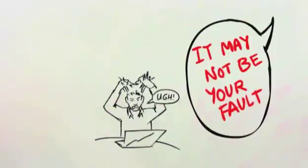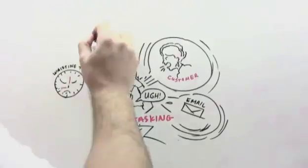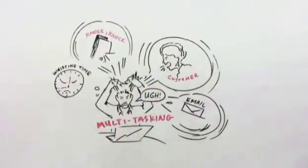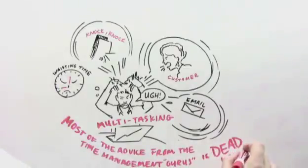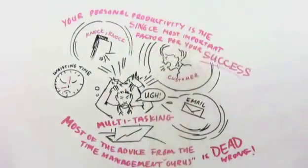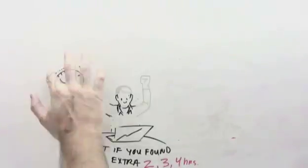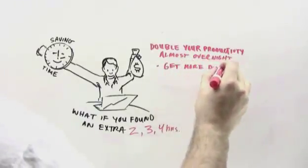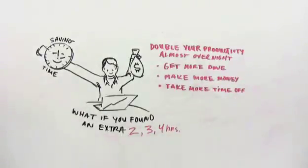You see, there's a ton of misinformation out there about productivity, which leads many entrepreneurs in the completely wrong direction. For example, have you been multitasking? Most entrepreneurs assume that multitasking is a good thing because that's what you've been told. But in reality, it's a huge drain on your productivity. In other words, most of the advice you've heard from the so-called time management gurus is dead wrong. Why is this important? Your personal productivity is the single most controllable factor in your long-term success. Yes, think about it. How much more productive and successful would you be if you found an extra two, three, or four hours every day? If you take the right approach, you really can double your productivity almost overnight. And when you increase your productivity, you not only get more done, but you make more money and you can take more time off. And isn't that why you want to be an entrepreneur in the first place? To have the freedom to do what you want when you want?